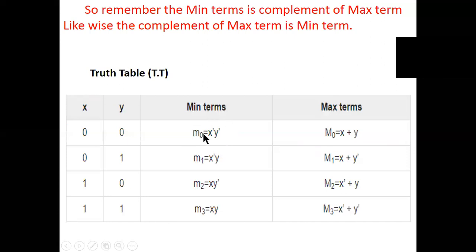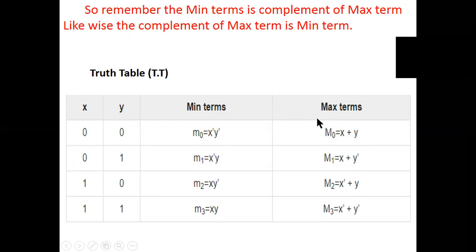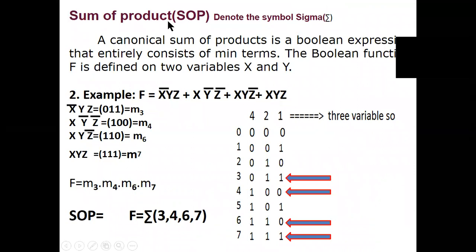What is the min term? In min term, for zero-zero it is x-bar y-bar. For one-one it is x y as is. In max term, for zero-zero there is no bar — it is x plus y. For one-one, for one there is a bar, for zero there is no bar — that is opposite to min term. Remember min term and max term.